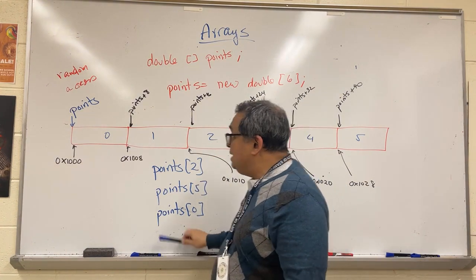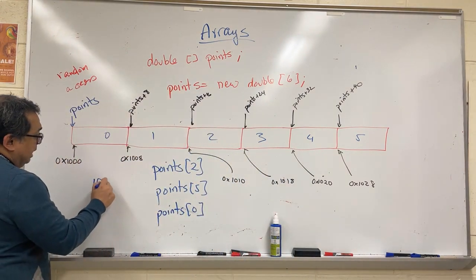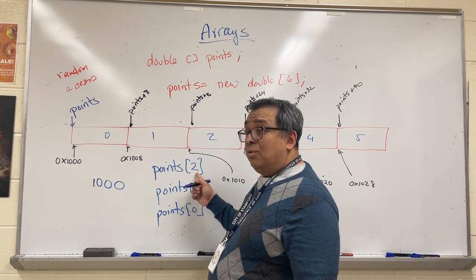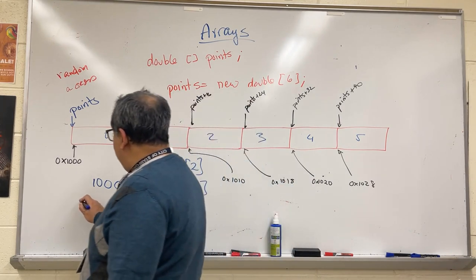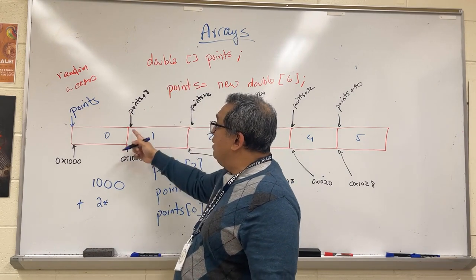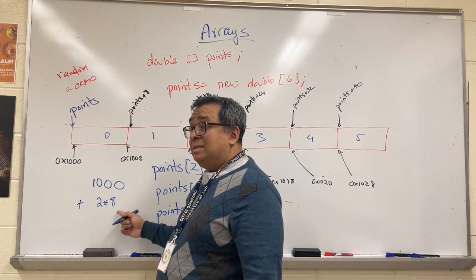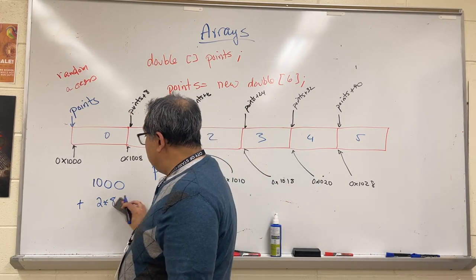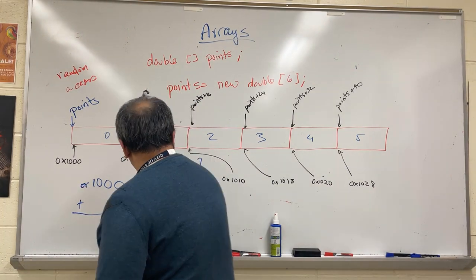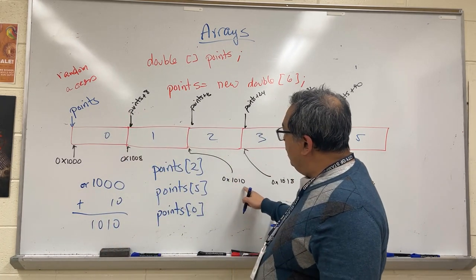It takes the base address for the array—in this case happens to be a thousand, and keep in mind these are all hexadecimal numbers. It then says, oh you want two over, so it's going to add two. And how long is each item? Well, these are decimal numbers, so they are eight bytes wide, so it's going to multiply the two by eight, get sixteen. Sixteen in hexadecimal is just ten, and it's going to add ten right here, so this is going to end up being hexadecimal 1010. That's where the third element is located.